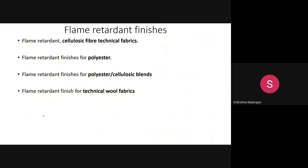You have now learned what is flame retardancy, the need for it, and the mechanisms to impart flame retardancy for cellulosic fibers and thermoplastic fibers like polyester. Now we will see what types of finishing chemicals are being used. For cellulosic material, you would say phosphorus-based compounds — but what is the full chemical name? For every fiber, the chemicals and chemistry involved are different.